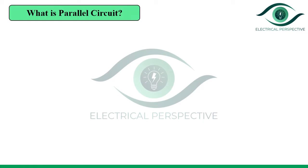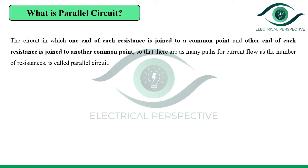Before answering the question, first we will see what is a parallel circuit. The circuit in which one end of each resistance is joined to a common point and the other end of each resistance is joined to another common point, so that there are as many paths for current flow as the number of resistances, is called a parallel circuit.